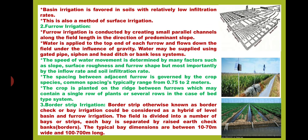The spacing between ridges and furrows is governed by the crop species; common spacing typically ranges from 0.75 to 2 meters. The crop is planted on the ridge between furrows, which may contain a single row of plants or several rows in case of a bed type system. Lastly, we discuss about border strip irrigation, otherwise known as border check or bay irrigation, which could be considered as a hybrid of level basin and furrow irrigation.